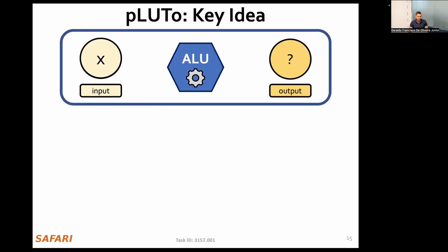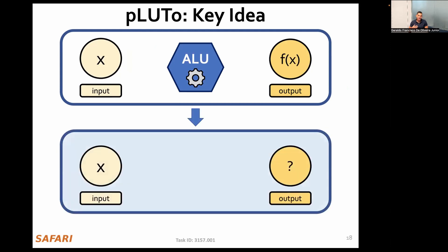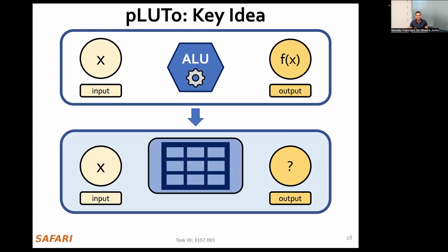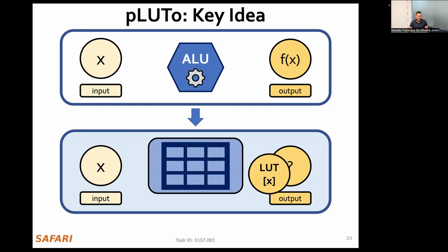With this goal in mind, we propose Pluto. I'm going to explain the key idea behind our solution. Conventional architectures employ dedicated arithmetic logic units to transform input elements and perform computation. An ALU takes as input an arbitrary value x and performs a given function to transform the input into the appropriate output. In Pluto, we take another approach: instead of transforming an input via arithmetic operations, we store in a table pre-computed mappings of input elements to output elements. Thus, computation can be performed by simply consulting the mapping table, which produces the target output.